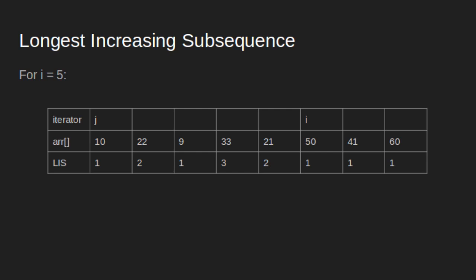For i equal to 5, is 50 greater than 10? Yes. So LIS of i becomes 1 plus 1 equal to 2. Is 50 greater than 22? Yes. LIS of i becomes 2 plus 1 equal to 3. Is 50 greater than 9? Yes. So LIS of i becomes 1 plus 1 equal to 2. We need to make sure we are updating the maximum value of LIS — maximum of 2 and 3 is 3, so we do not change value. Is 50 greater than 33? Yes. LIS of i becomes 3 plus 1 equal to 4. Is 50 greater than 21? Yes. LIS of i becomes 2 plus 1 equal to 3. Maximum of 4 and 3 is 4, so we do not change value.